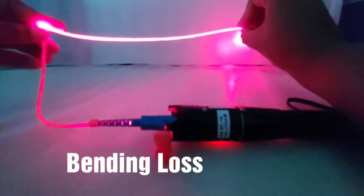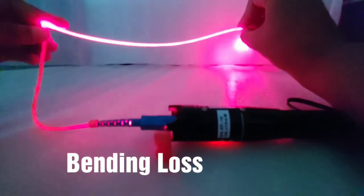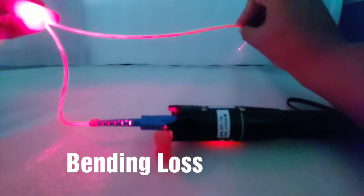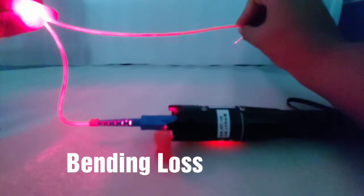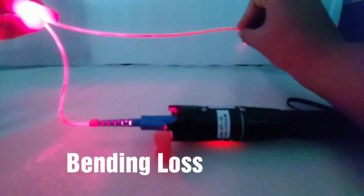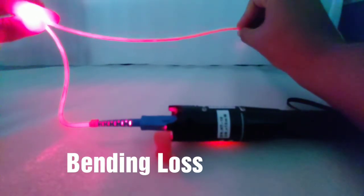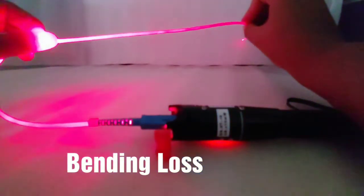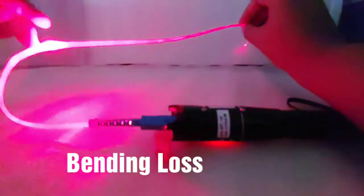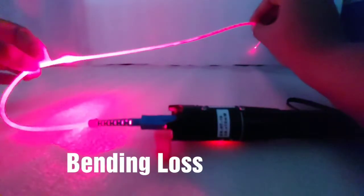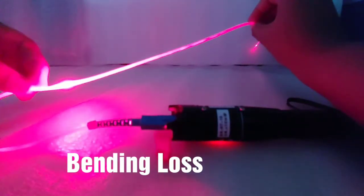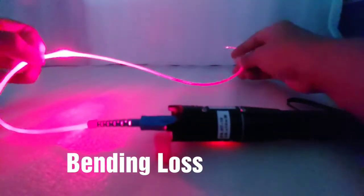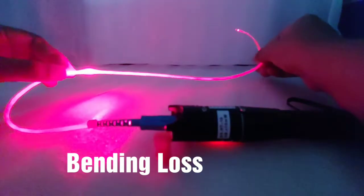This is known as bending loss. You can see now, if I am bending the fiber here, my output light is almost zero, which means in a network if there is a huge bend in the fiber, my output light will not be coming out. After continuous bending, that point has got broken and now the light is not reaching the output. This is the effect of bending loss.